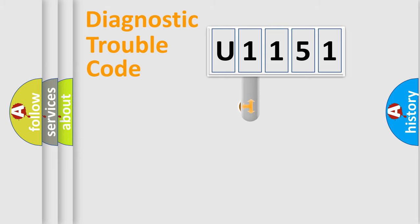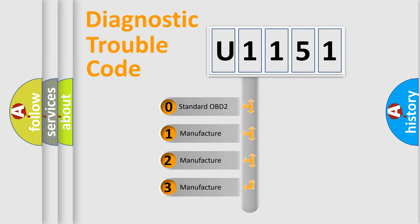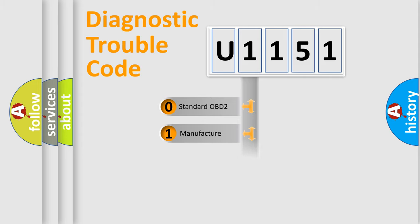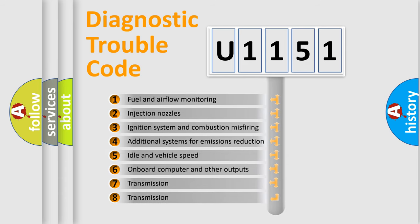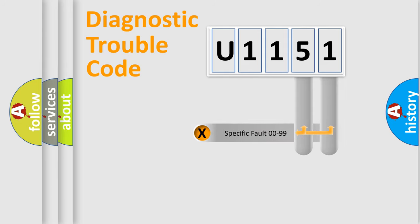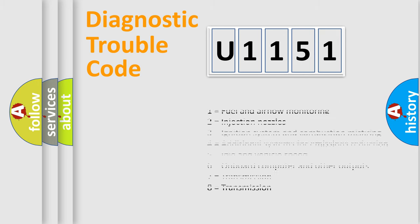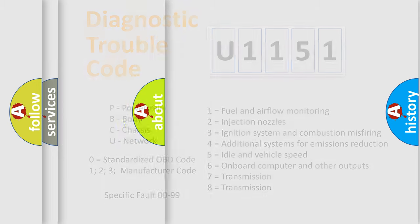This distribution is defined in the first character of the code. If the second character is expressed as zero, it is a standardized error. In the case of numbers 1, 2, or 3, it is a more specific car-specific error. The third character specifies a subset of errors. This division is valid only for the standardized DTC code, and only the last two characters define the specific fault of the group. Such a division is valid only if the second character code is expressed by the number 0.